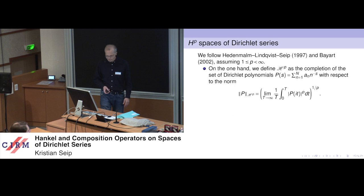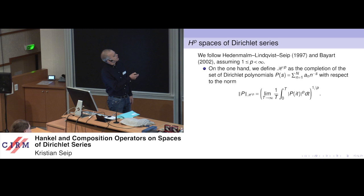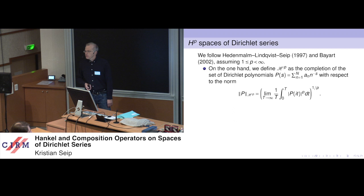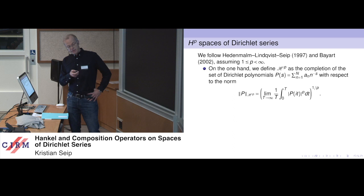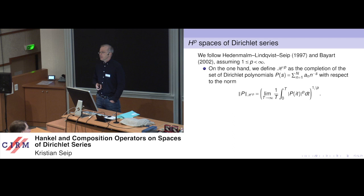The first one is a one-dimensional definition. We look at Dirichlet polynomials: P of S equals sum from N=1 to capital N of A_N times N to the minus S. We compute the following norm for Dirichlet polynomials: we integrate from 0 to T the mean of this and let T go to infinity. So we compute it on the imaginary axis, and then we take the completion with respect to this norm. That is one possible definition.